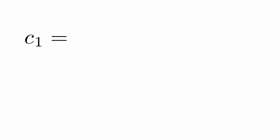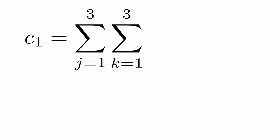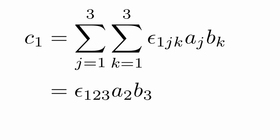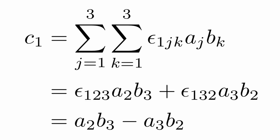We can write out the terms. The first component of c, c sub one, is equal to the sum over j and k of epsilon one jk times a sub j times b sub k. The only two nonzero terms are epsilon 123 times a sub 2 times b sub 3 minus a sub 3 times b sub 2, which is the usual definition of the cross product.